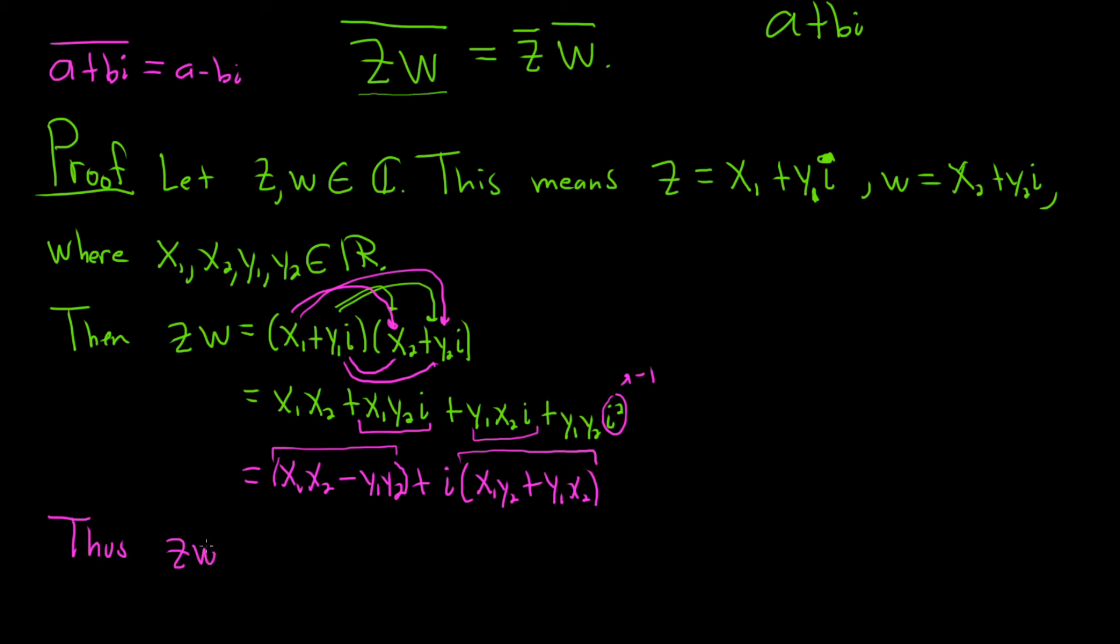So, thus, the conjugate of zw is going to be x1x2 minus y1y2 minus i times x1y2 plus y1x2. So, that would be the conjugate. So, now we just have to do the other side.